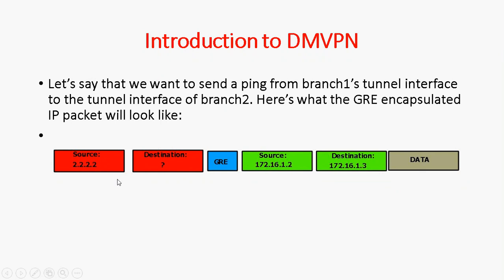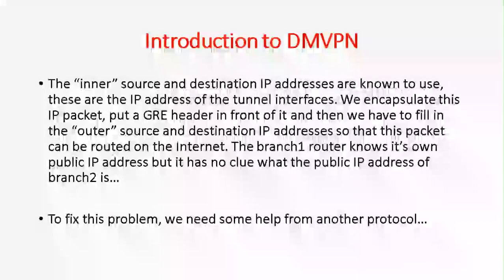Source 2.2.2.2 is branch office 1's public IP. But how does branch office 1 router know what public IP branch office 2 is using? As a network administrator I know all the public and private IP addresses, but the branch office 1 router doesn't. Only once branch office 1 knows the public IP of branch office 2 can it dynamically form the tunnel. The inner source and destination IP addresses — the tunnel interface IPs — are known, but the outer source and destination public IPs are not.